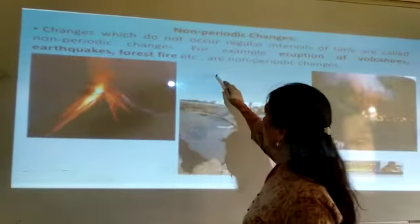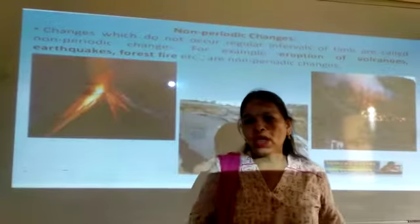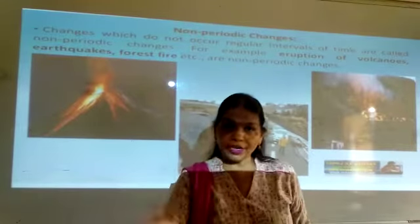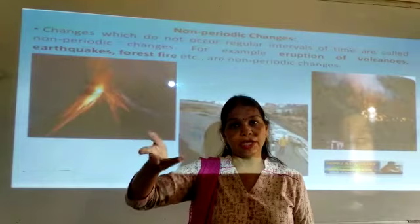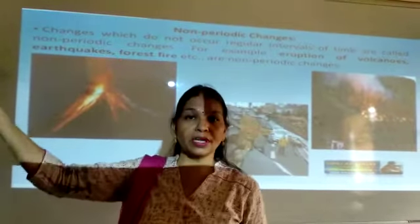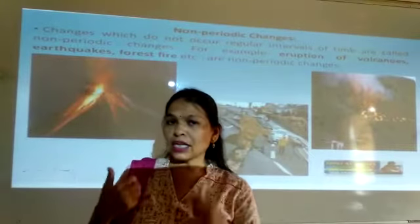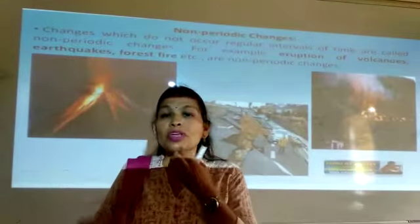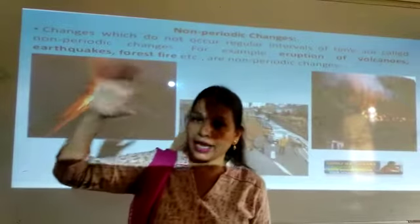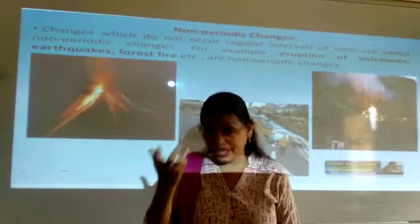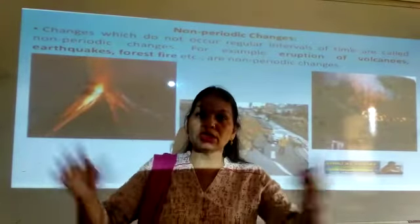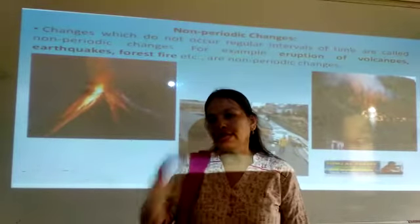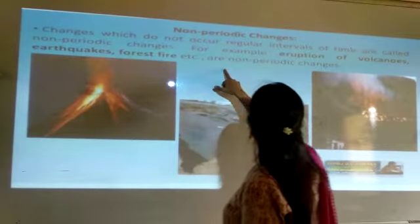Earthquakes, forest fires — when a forest fire occurs, millions of trees are burned and they cannot immediately start growing again. It can take 5 to 10 years because all the fertility and nutrients in the soil are destroyed by the forest fire. Trees require nutrients to grow, and that is why this is a non-periodic change.